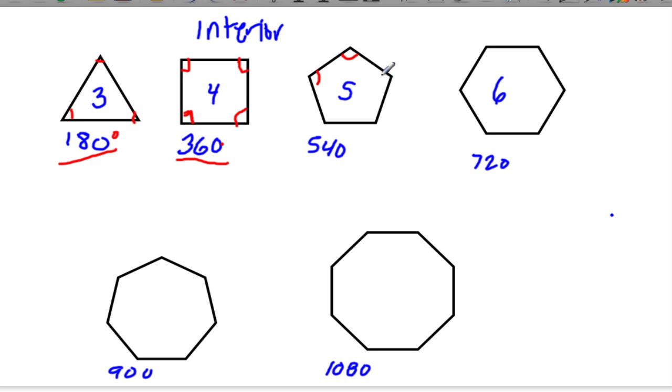A pentagon has five interior angles, and if you add them up, you get 540 degrees. A hexagon has six interior angles, which add up to 720 degrees.